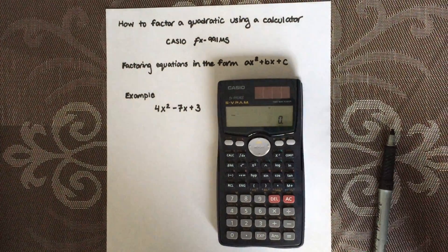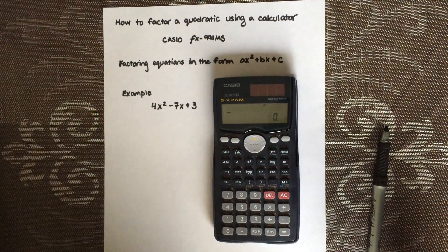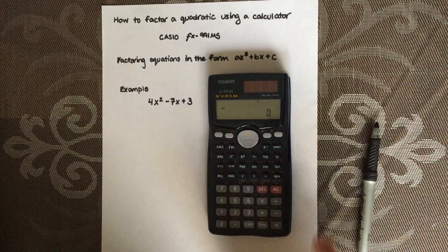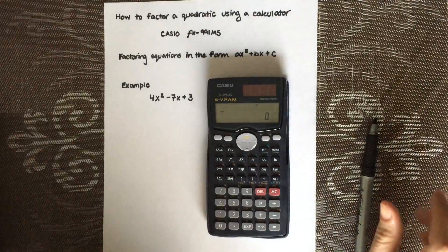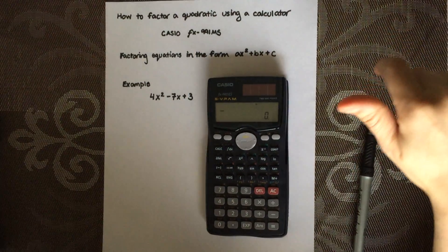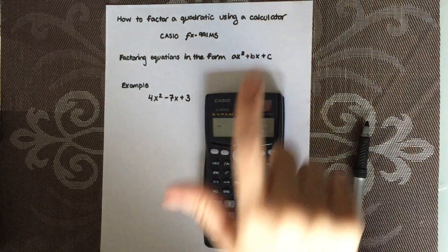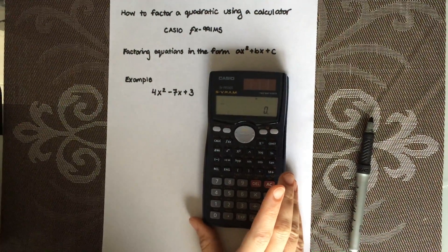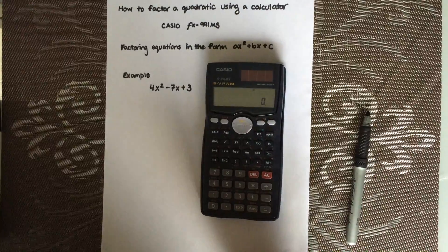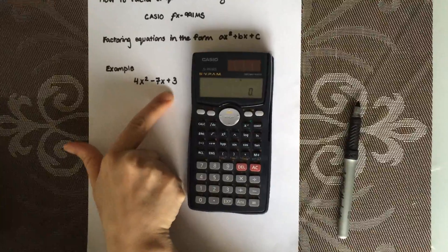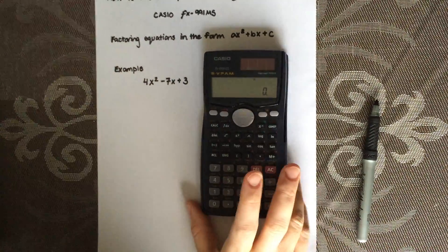I'm going to show you how to factor a quadratic using the Casio FX991MS calculator. The example I'm going to show today is in the form AX squared plus BX plus C, where there's a value in front of your X squared as well as a value in front of your X. So the example I'm going to show you is 4X squared minus 7X plus 3.